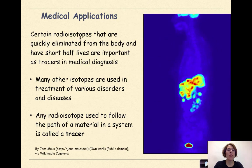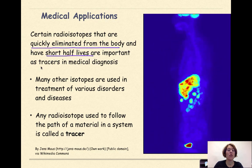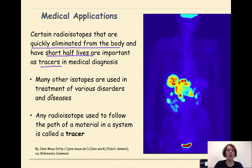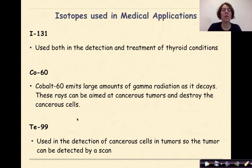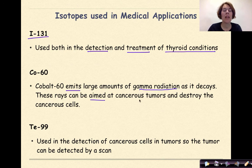Medical applications. Certain radioisotopes that are quickly eliminated from the body and have short half-lives are important as tracers in medical diagnosis. Many other isotopes are used in the treatment of various disorders and diseases. Any radioisotope used to follow the path of material in a system is called a tracer. Iodine-131 is used in the detection and treatment of thyroid conditions. Cobalt-60 emits large amounts of gamma radiation as it decays; these rays can be aimed at cancerous tumors to destroy cancerous cells. Technetium-99 is used in the detection of cancerous cells in tumors so that the tumor can be detected by a scan.